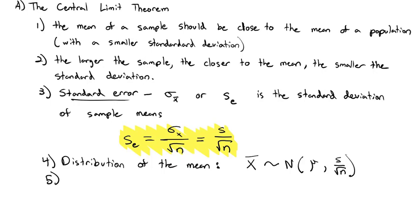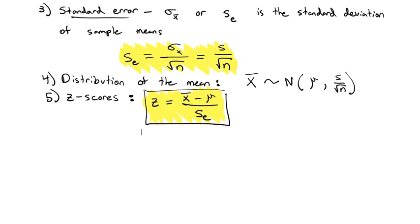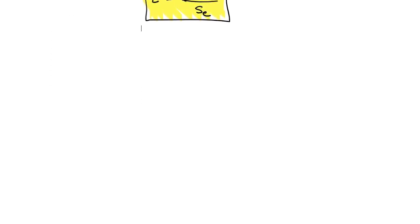Then we can go forward and calculate z-scores and also probabilities in much the same way we did before. Now the z-score is equal to the mean of our sample minus the overall mean divided by the standard error. And that's going to be the key new thing that the central limit theorem gives us, is that new standard error as we calculate our z values, because we have a sample, not just one value.